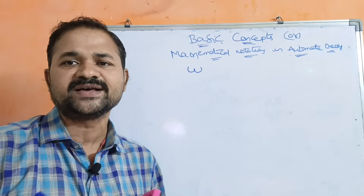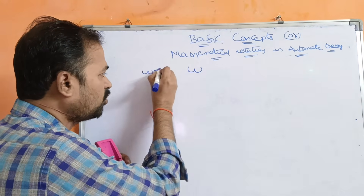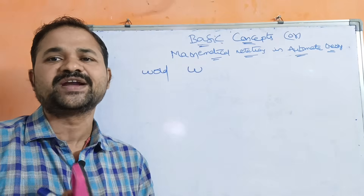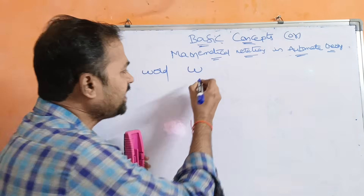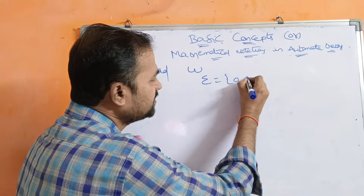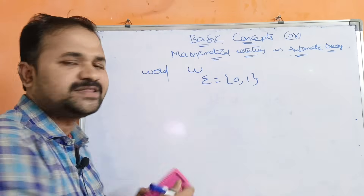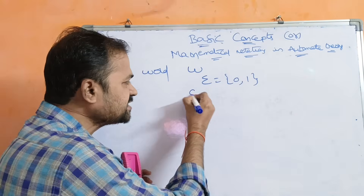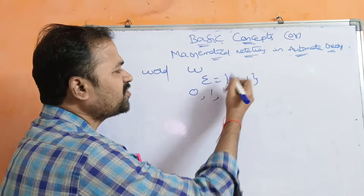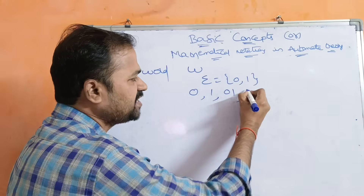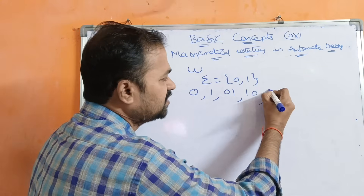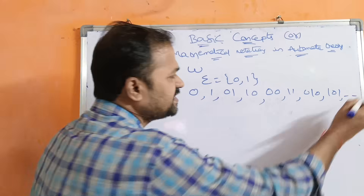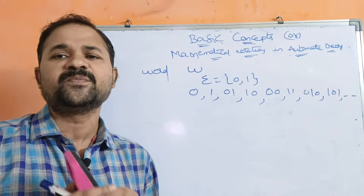A string can also be called a word. For example, if sigma = {0, 1}, then various strings generated from this alphabet are: 0, 1, 01, 10, 00, 11, 010, 101, and likewise we can have any number of strings.